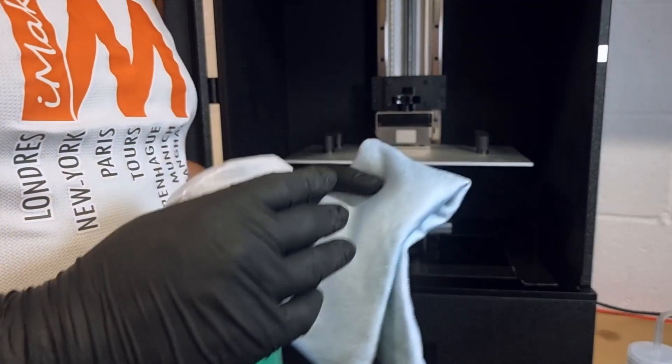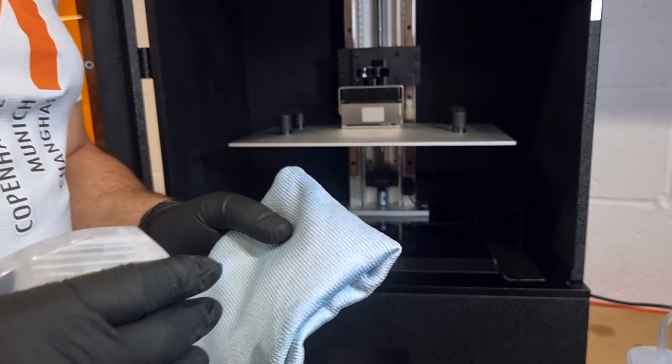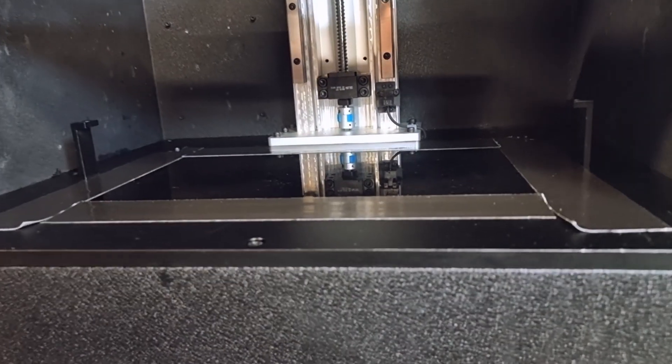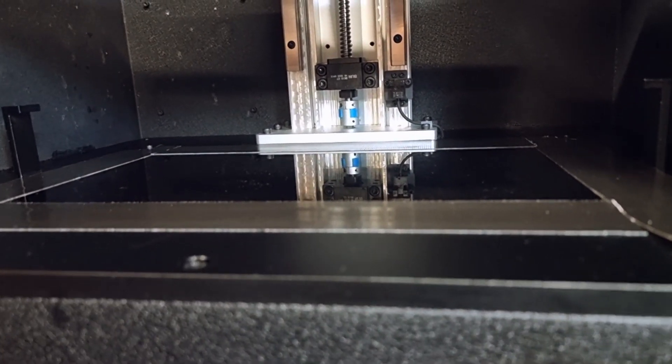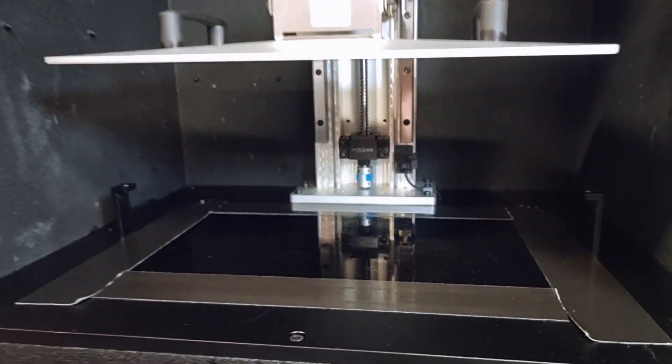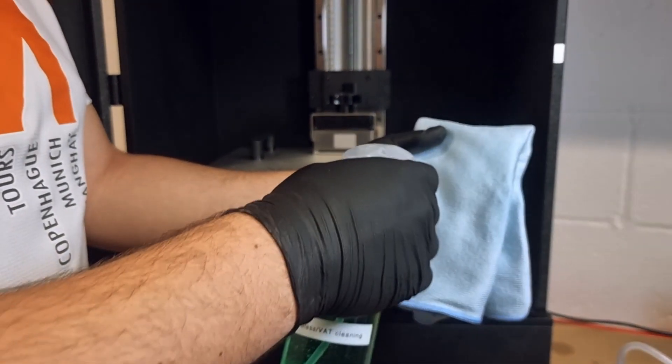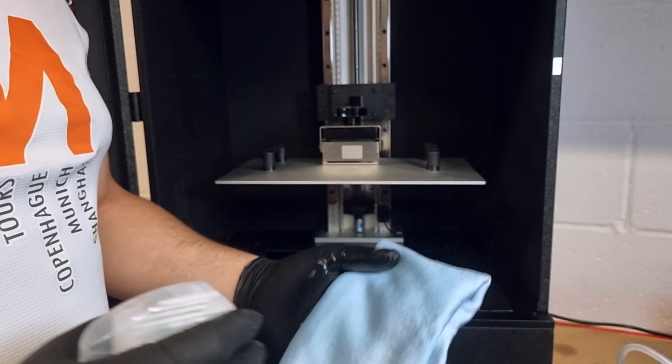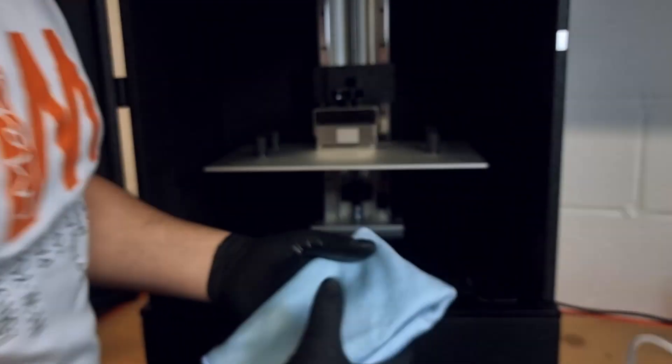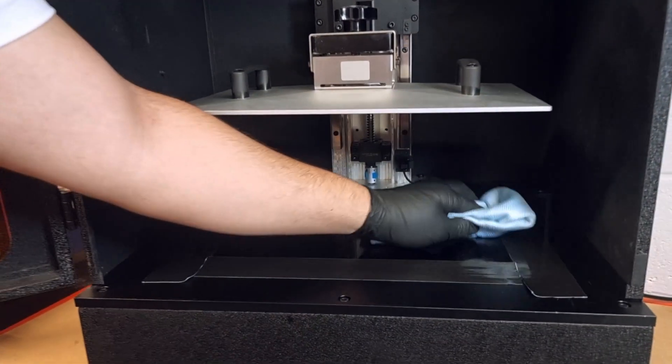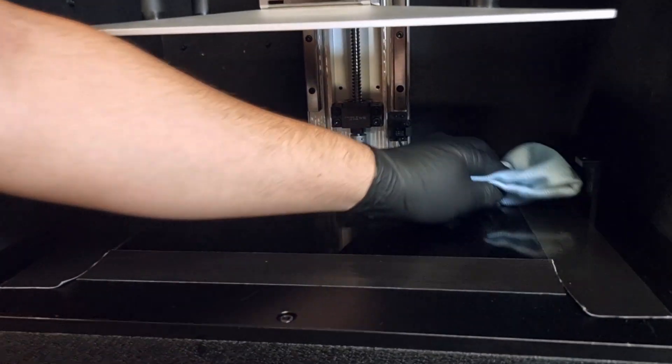Firstly, we have to clean the LCD screen from all the dust and fine particles and also the resin from the previous printing. So we start by spraying the vat and glass cleaner on the microfiber cloth, and we try to remove all the dust from the LCD screen as you can see here.